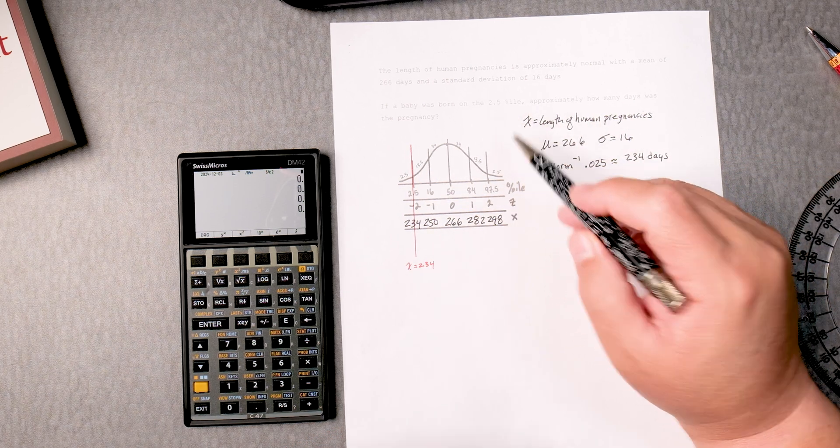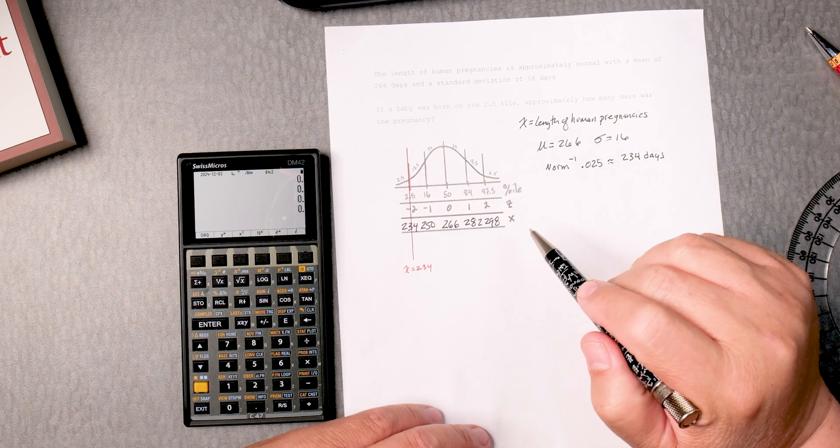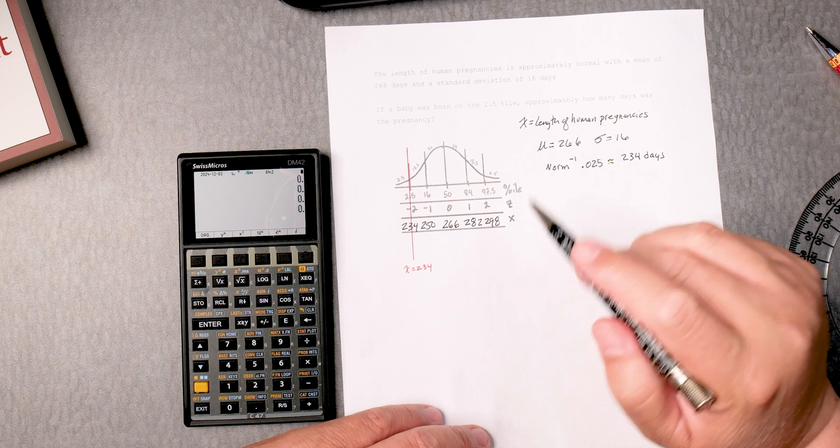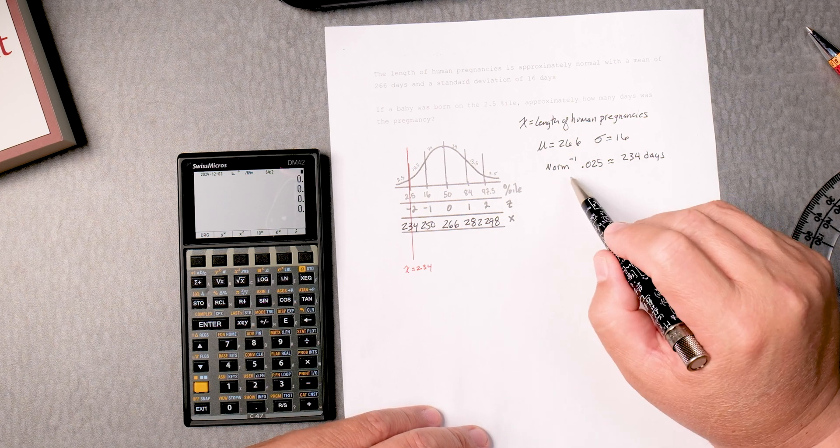It doesn't say the top 2.5%, which would be over here on the right, but the 2.5 percentile. So this is the inverse normal of 0.025.